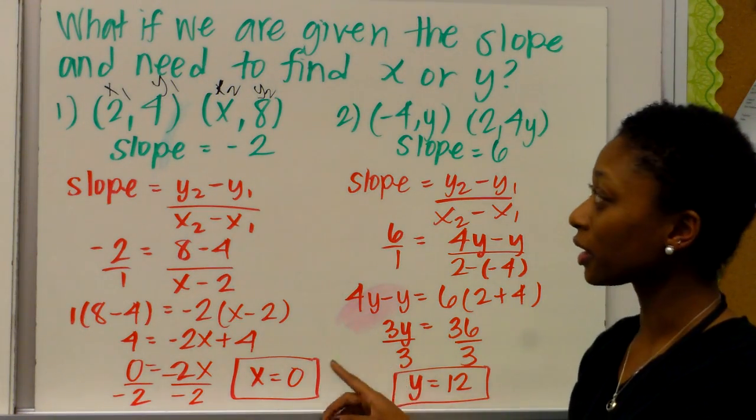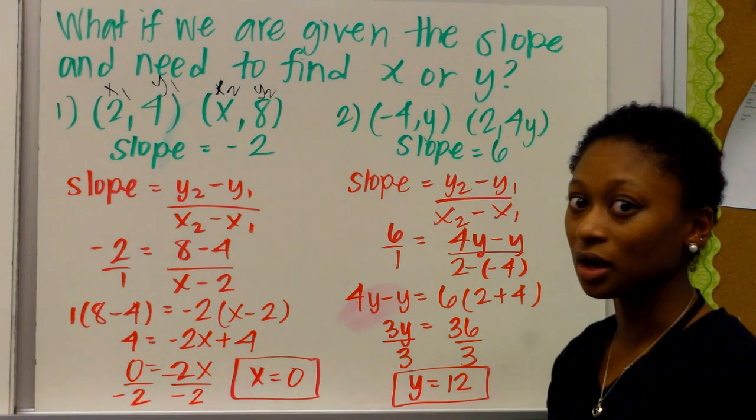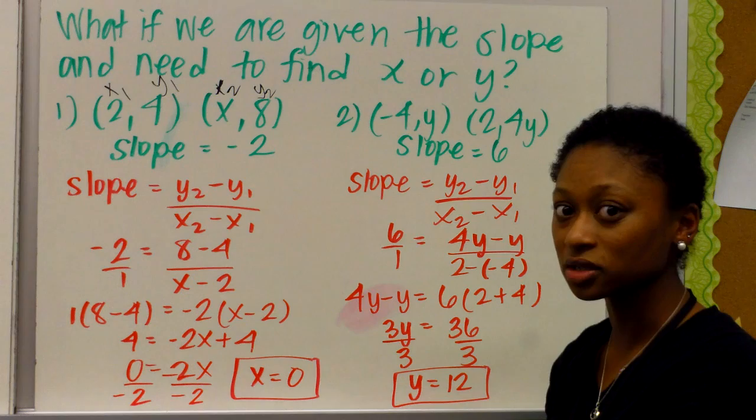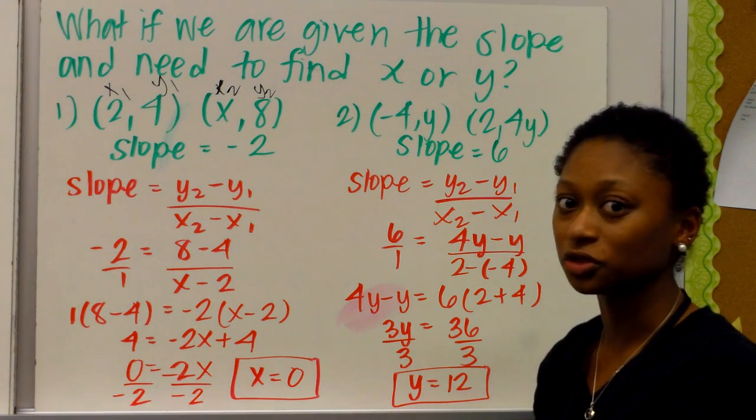Alright? So in summary, we know how to find x and y given the slope. We know how to use two ordered pairs to find the slope, and then use a graph to find the slope to do rise over run.